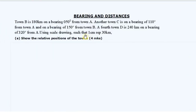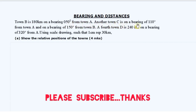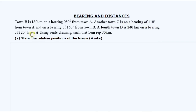The topic today is scale drawing, and the question we have today is on bearing and distances. The question reads: town B is 180 kilometers on a bearing of 50 degrees from town A. Another town C is on a bearing of 110 degrees from town A, and on a bearing of 150 degrees from town B. A fourth town D is 240 kilometers on a bearing of 320 degrees from town A. Using scale drawing, such that 1 centimeter represents 30 kilometers.